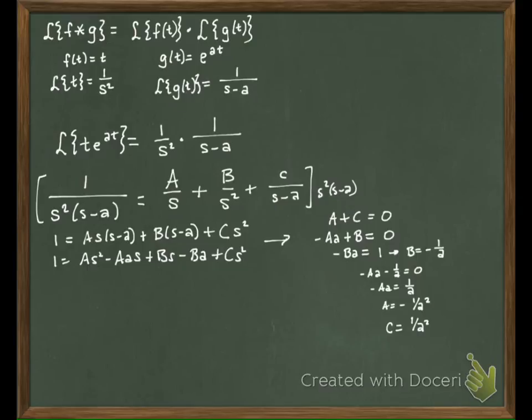Okay, so we'll come back over here then, and we know that little h can be rewritten negative one over A squared over S minus one over A over S squared plus one over A squared times S minus A.